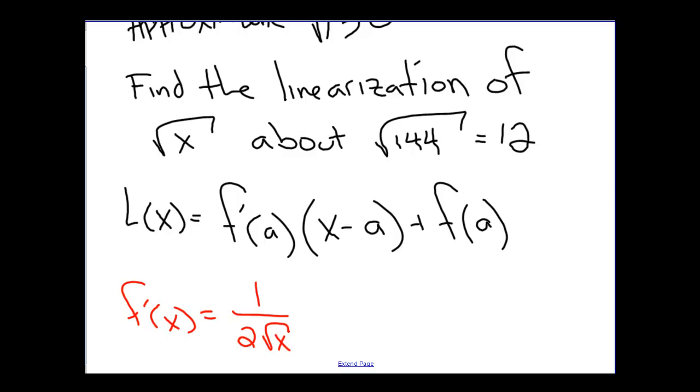And if we plug in 144 here, the derivative at 144 is going to be 1 over 2 times the square root of 144, which is just 12, so this would be 1 over 24.